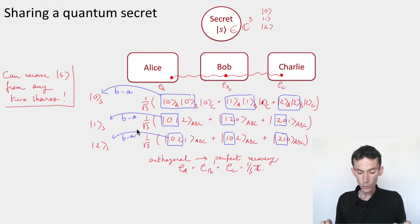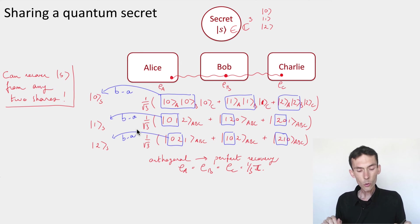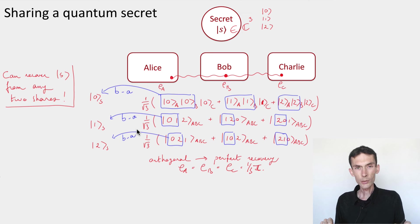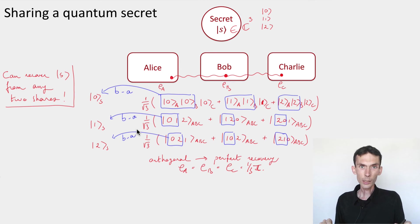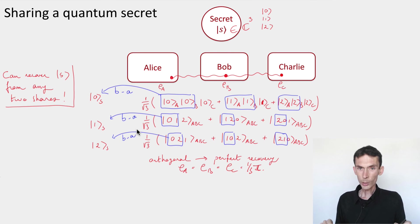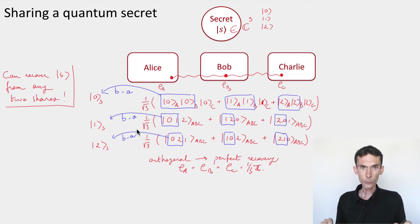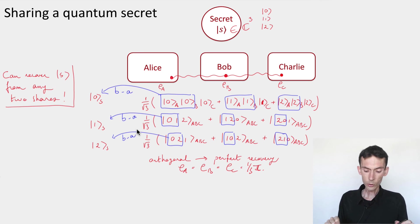So I can always recover the secret from any two of the three qutrits. That's not a coincidence. What I've described here is more than a secret sharing scheme — it's an error-correcting code that is correct with respect to deletion of one of the three shares. We can recover the original secret even if we lose one of the shares.